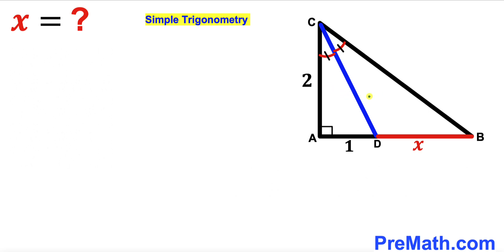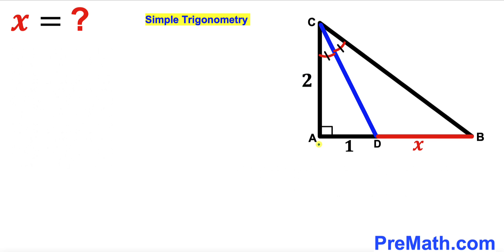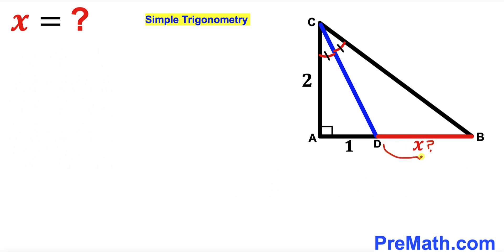This angle bisector CD divides angle ACB into two equal parts. Moreover, this side length AC is 2 units, this segment AD length is 1 unit, and this BD length is X. Our task is to find the value of X — in other words, we are going to find this length BD.